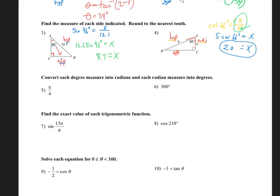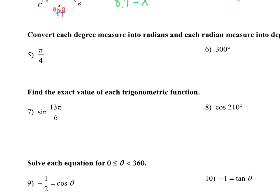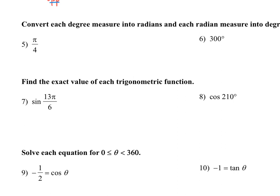The next topic we covered was converting from degree measurements to radians and back. If you see something with a pi in it, chances are it's radians — like number 5, so we'll need to change it to degrees. And number 6, you can see the degree symbol after the 300, so that's going to be degrees and we'll change it to radians. The trick is the conversion factor we use is always that pi equals 180 degrees.